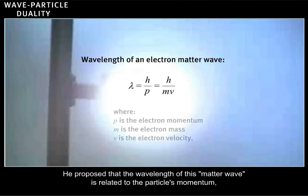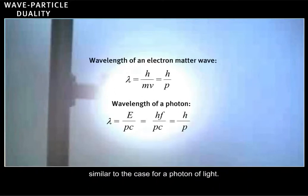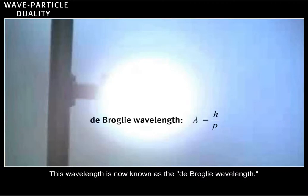He proposed that the wavelength of this matter wave is related to the particle's momentum, similar to the case for a photon of light. This wavelength is now known as the de Broglie wavelength.